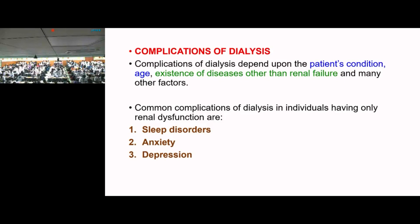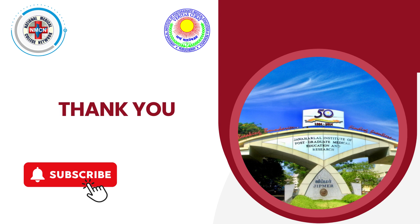In today's class we covered renal function tests, physical characteristics of urine, acute and chronic renal failure, and the artificial kidney. The artificial kidney can come as a 3 or 5 mark exam question — draw the diagram, explain the principle, give indications and complications. Many viva questions can come from today's topic, so learn the normal values and definitions.